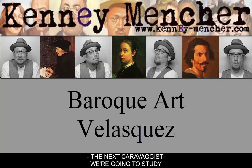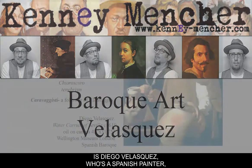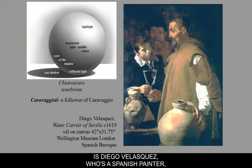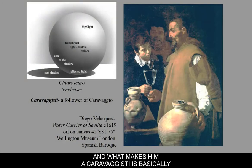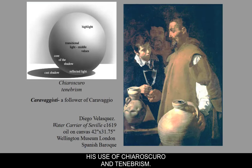The next Caravaggisti we're going to study is Diego Velázquez, who's a Spanish painter working during the Baroque era. What makes him a Caravaggisti is basically his use of chiaroscuro and tenebrism.